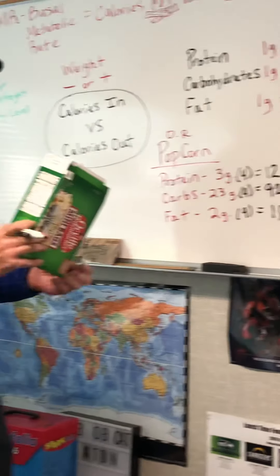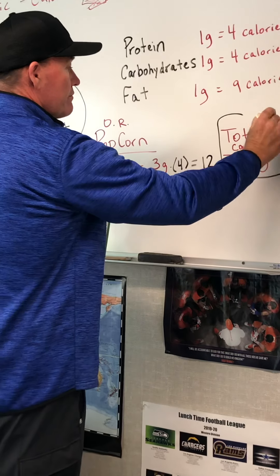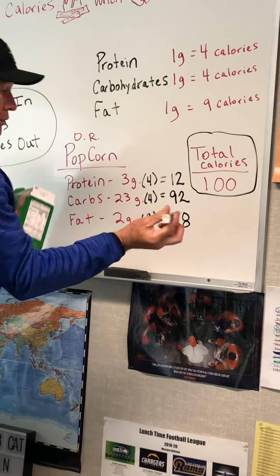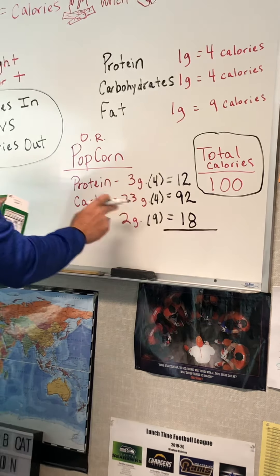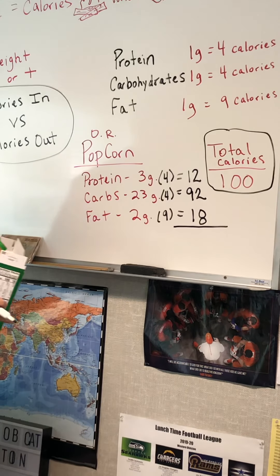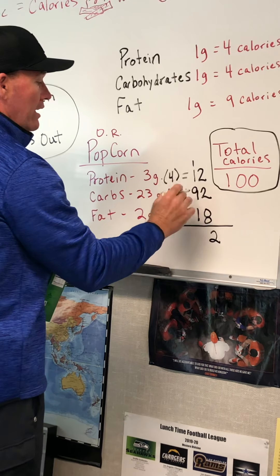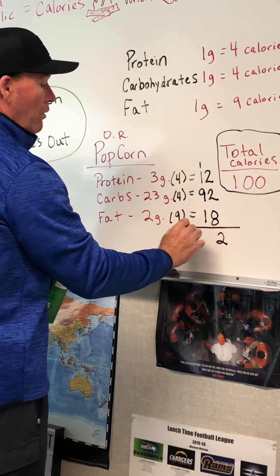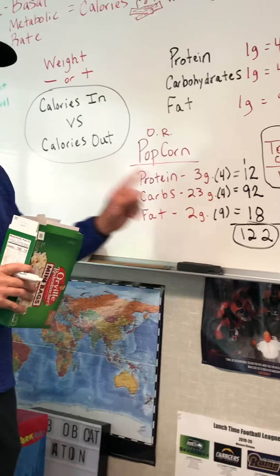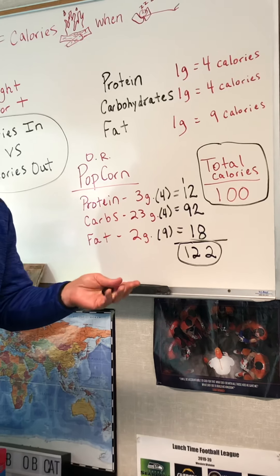According to the nutrition label, they tell us there are 100 calories in one bag of the popcorn. But we just did the math — adding up the calories from protein (12), carbs (92), and fat (18) — and we get 122 calories in one bag of popcorn, not 100. So we've talked about this before: some nutrition labels lie. They're not always accurate.